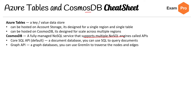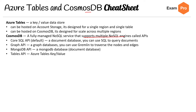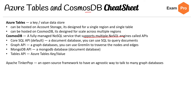Graph API is a graph database you can use with Gremlin to traverse the nodes and edges. MongoDB API is a MongoDB database — it is a document database. Tables API is just Azure Tables key-value, but within Cosmos DB. Apache TinkerPop is an open source framework to have an agnostic way to talk to many graph databases; they probably won't ask you about TinkerPop on the exam.